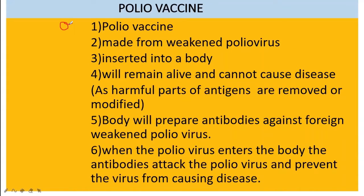This is the polio virus, which has antigens. The antigen is responsible for the production of toxic protein which causes polio disease. How is the polio vaccine produced from this harmful virus? What the scientists are doing is making this virus weakened.